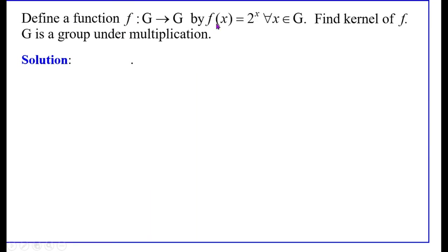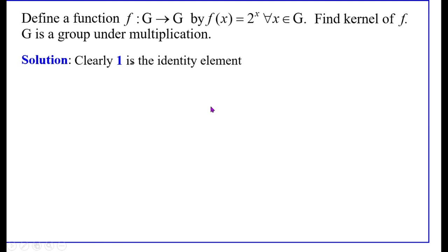Define a function F from G to G by F(X) equals 2 to the power X, for all X in G. Find ker(F). G is a group under multiplication, so clearly 1 is the identity element. By definition, ker(F) is the set of all elements of G mapped into the identity element 1 of the co-domain group G. Therefore we consider F(X) equals 1.